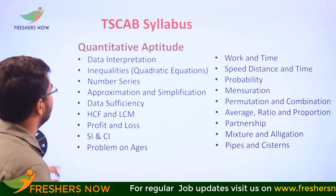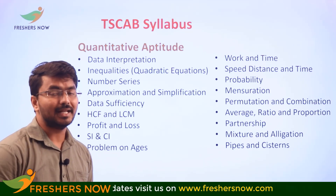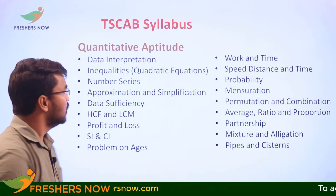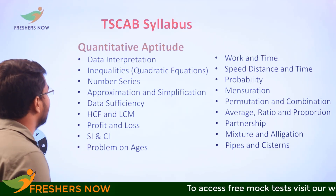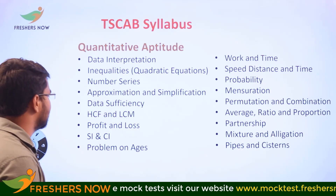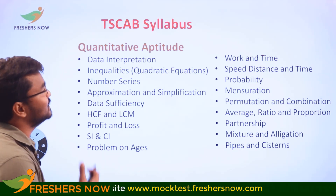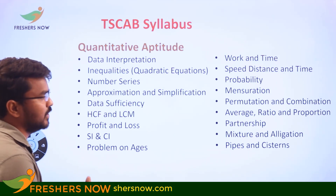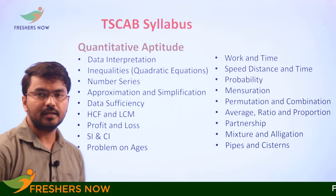For Quantitative Aptitude in banking examinations, the major topic is Data Interpretation. Other topics include: quadratic equations, number series, approximations and simplifications, data sufficiency, LCM and HCF, profit and loss, simple and compound interest, problems on ages, work and time, speed-distance-time, probability, mensuration, permutations and combinations, averages, ratio and proportion, partnership, mixtures and allegations, and pipes and cisterns.